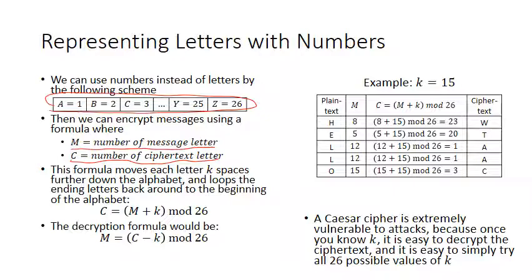The formula C equals M plus K mod 26 moves each letter K spaces further down the alphabet, and the mod 26 causes the looping behavior to go back around to the beginning of the alphabet. Generally speaking, for the computer scientists in the class, whenever you're using the mod operation in computer science, you're trying to implement some kind of looping behavior.